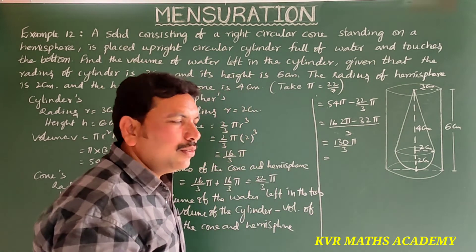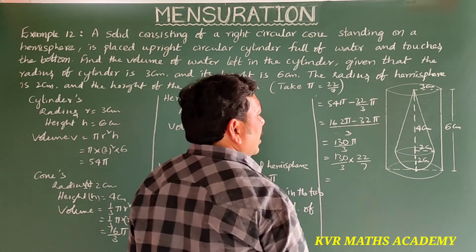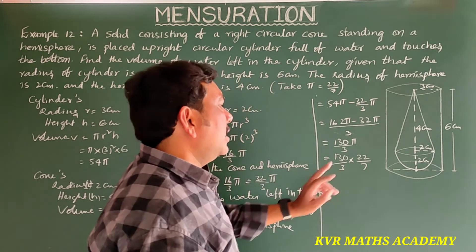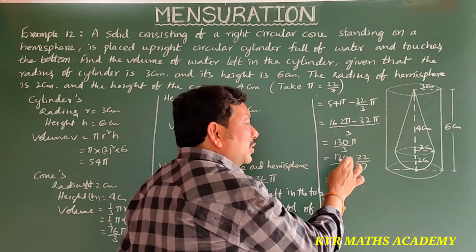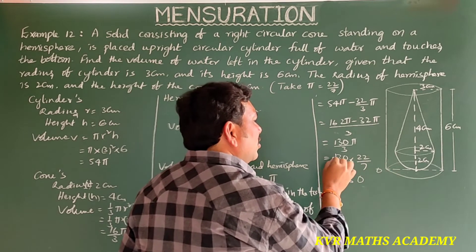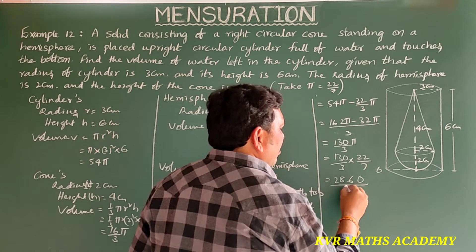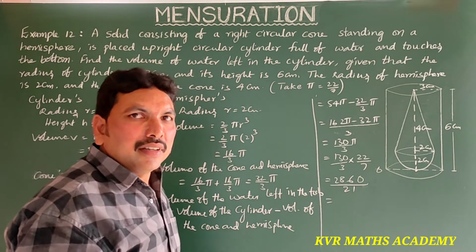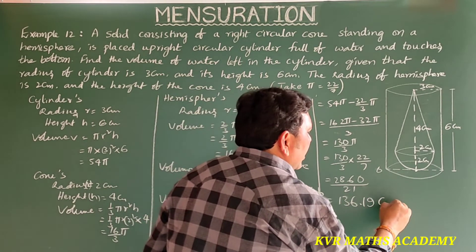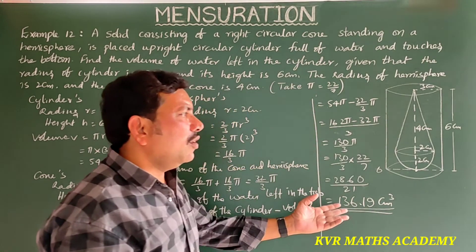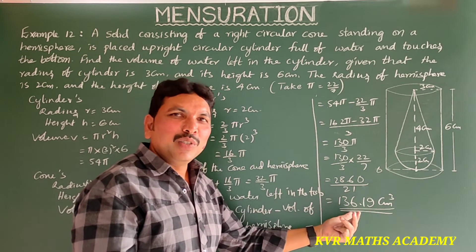Now substitute the pi value: 130 by 3 into 22 by 7. Multiplying: 22 into 130 gives 2860, divided by 21. If you simplify, you will get 136.19 centimetre cube. Therefore, the volume of water left in the tub is equal to 136.19 centimetre cube.